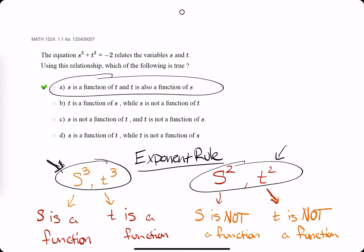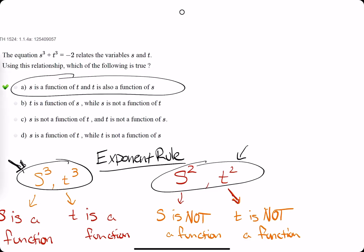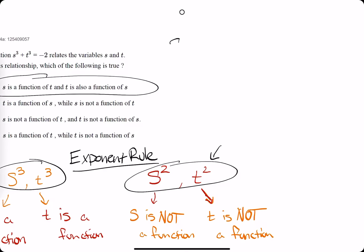And so if you'd like to keep watching, I will work out why this makes sense. So if we have s cubed plus t cubed equals negative 2,